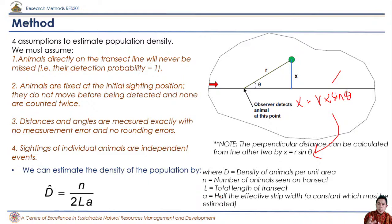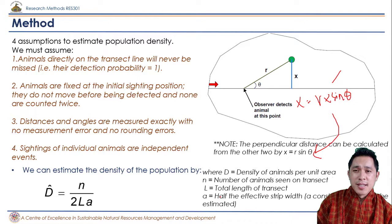You can use the perpendicular distance, the sighting distance, and the angle to derive many other parameters from the transect line — please explore those yourself. The basic thing is that transects can be used for estimating abundance and density, as we saw from D equals N divided by 2LA.